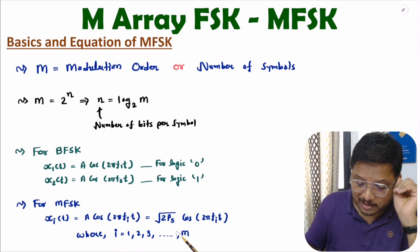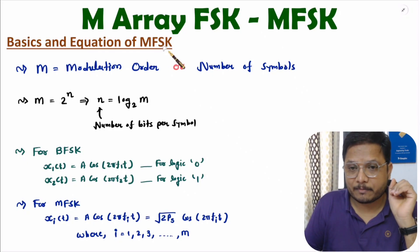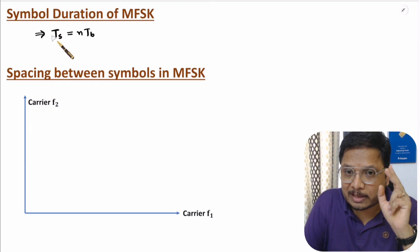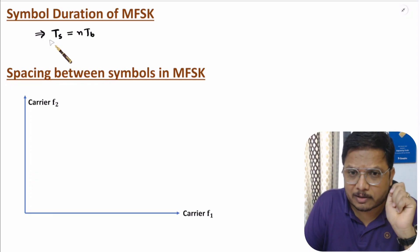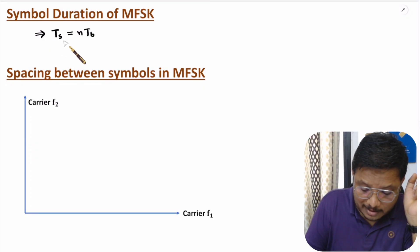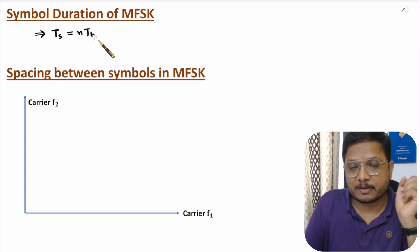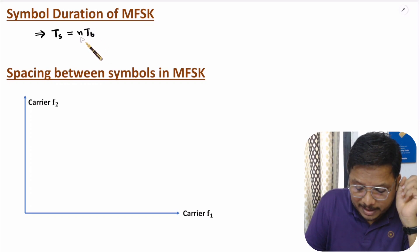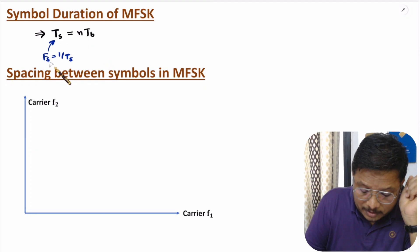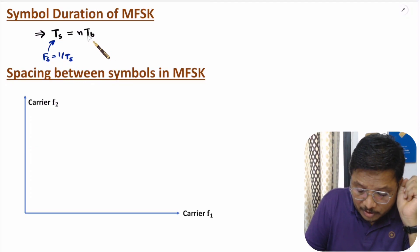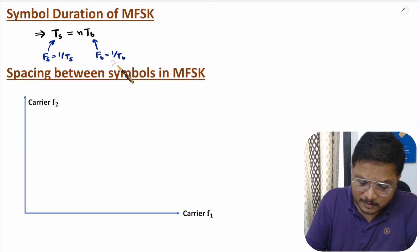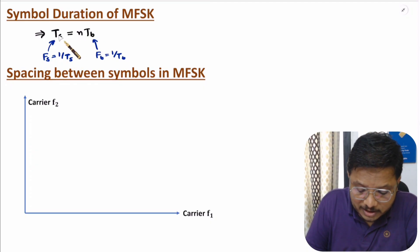Symbol duration Ts is defined as follows: with M symbols total and n bits per symbol, symbol duration equals n multiplied by bit duration Tb. So Ts = n·Tb. Symbol frequency fs equals 1/Ts, and bit frequency fb equals 1/Tb. This is how symbol duration and bit duration relate to each other.